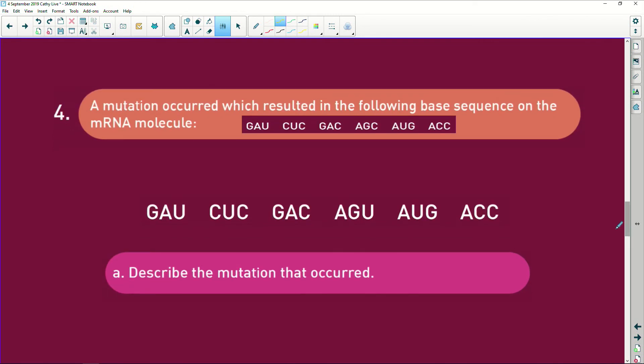Now we're talking about mutations. A mutation occurred which resulted in the following base sequence on the mRNA. So this was the original one, and this is the mutation that resulted. One is the same, two is the same, three, four, oh look, that C has now changed to a U. This one is the same and that one is the same.